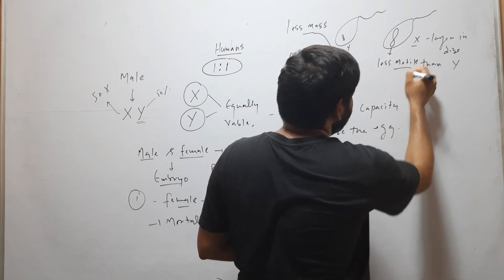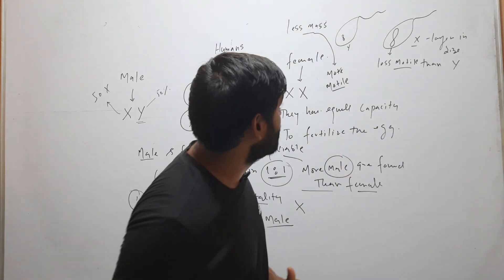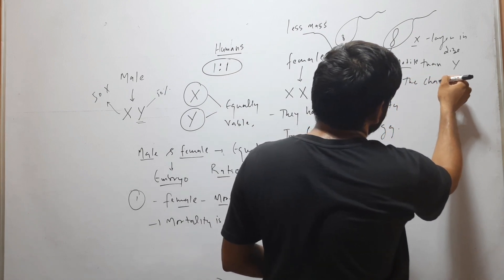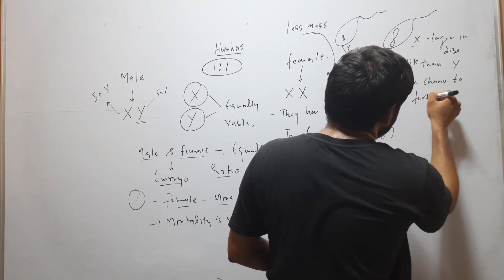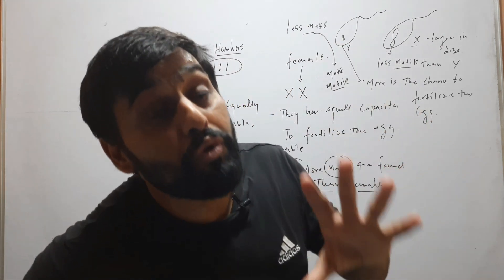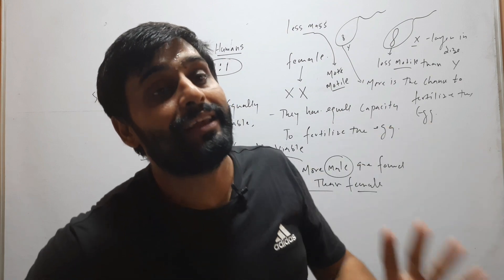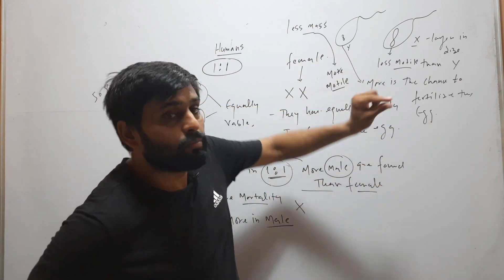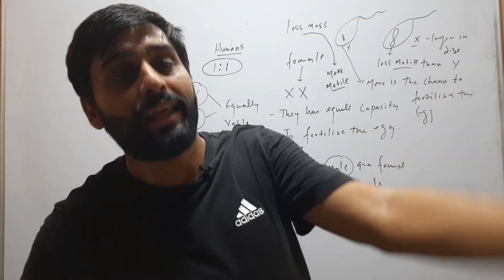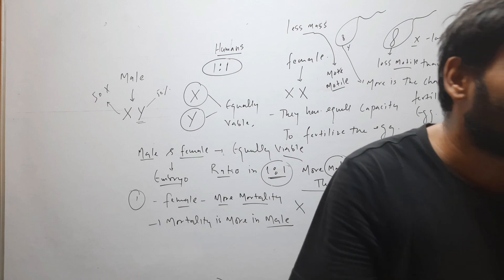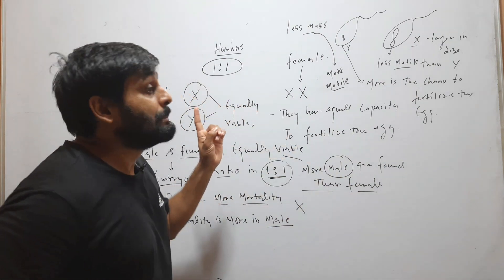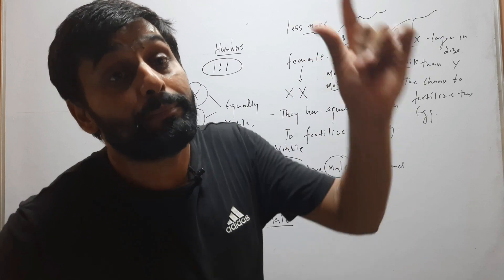The Y-bearing gamete is less motile because it carries the larger X chromosome. Greater motility means a greater chance of fertilizing the egg. The Y chromosome is smaller than the X chromosome, so it has less mass and is more motile. This greater motility gives it more chance to reach and fertilize the egg — that is why males are more than females in the human population.